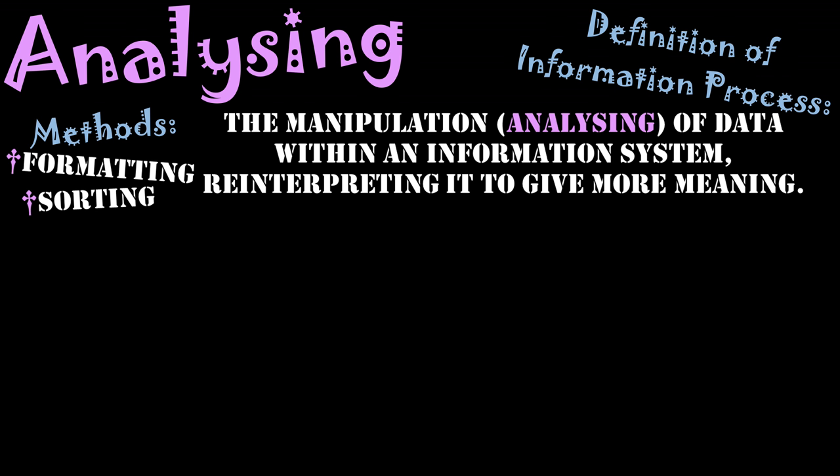We can arrange data in spreadsheets and databases through a specific sort, which may be alphabetical, or by primary keys or numbers, that put them in a specific order. By putting things in order we are analyzing, because the data is arranged and once again has more meaning.